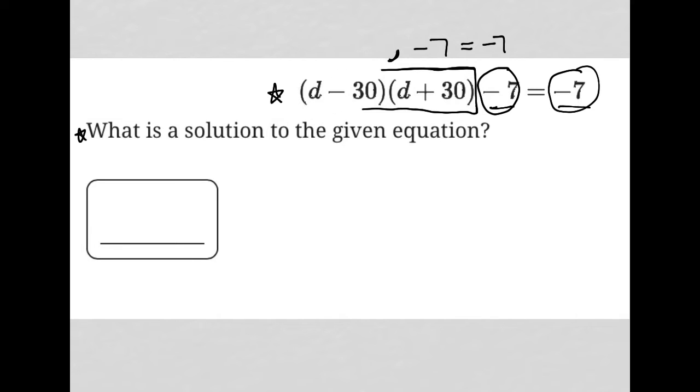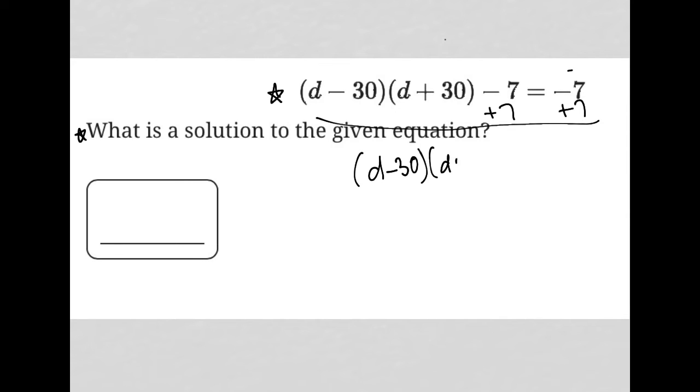And even if you didn't notice that, we could just add 7 to both sides and get the exact same thing, right? We'd get d minus 30 times d plus 30 is equal to 0.